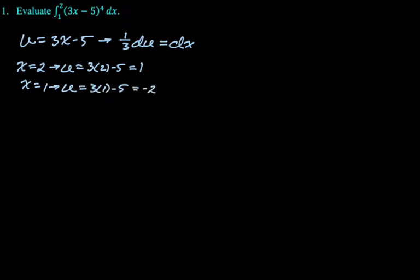And so now what we want to do is we want to rewrite the integral entirely in terms of u, including the bounds and including du. So let's do that. So we'll have the integral from negative two to one, and then it will become u to the fourth. And then when we replace dx, we're replacing it with one third du. I'm going to pull the one third out, and then put the du at the end.